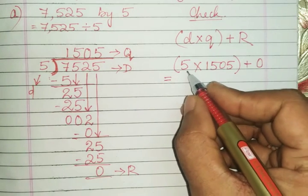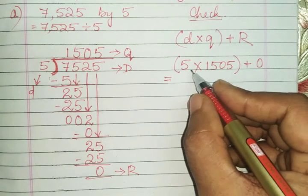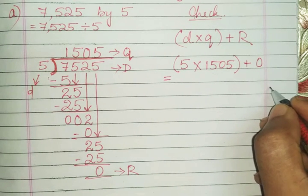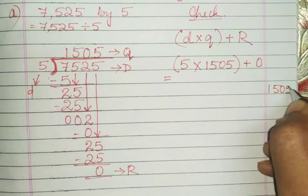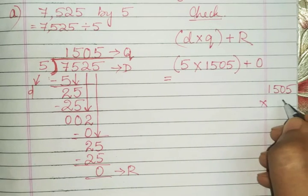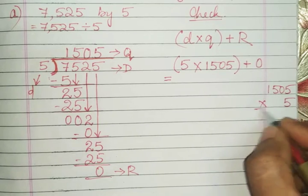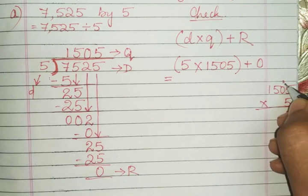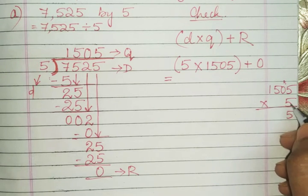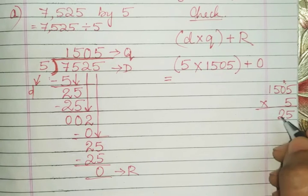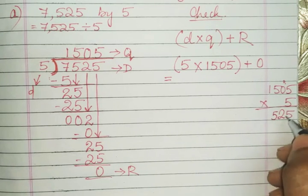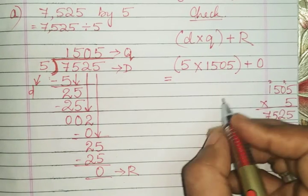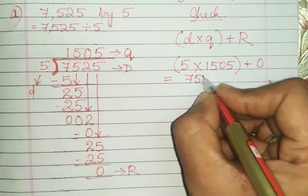That is 1505—close the bracket—plus remainder is 0. Now you remember the properties of multiplication: 5 into this number or this number into 5 is all the same. So 1505 into 5. Now, 5×5=25, keep 5, carry 2 to the top. 5×0=0 plus 2 is 2. 5×5 again is 25, keep 5, carry 2. 5×1=5 plus 2 is 7. Now it is 7525.